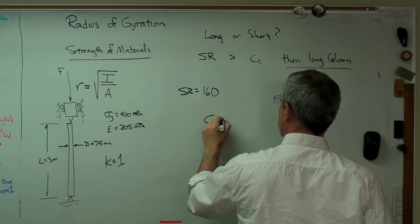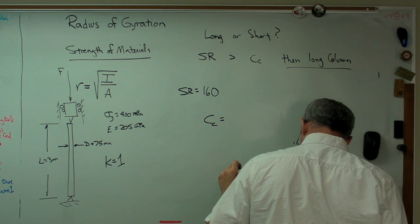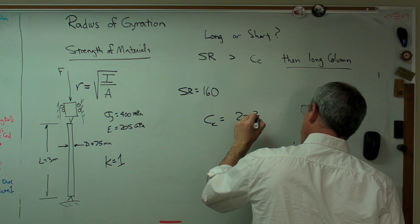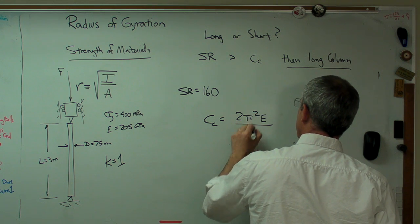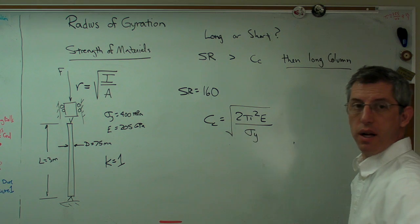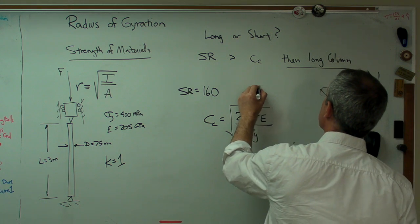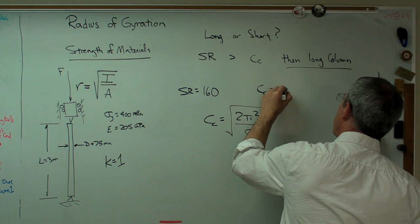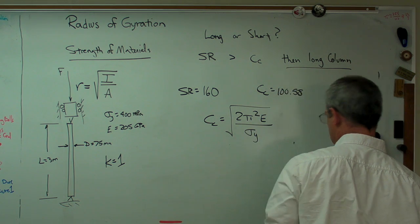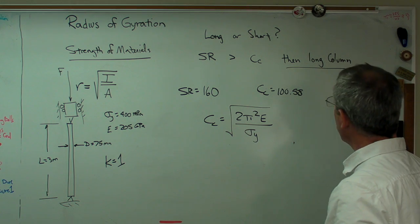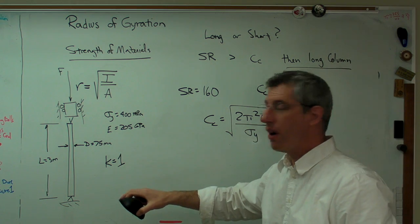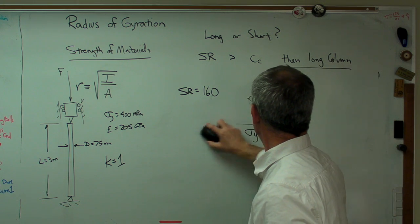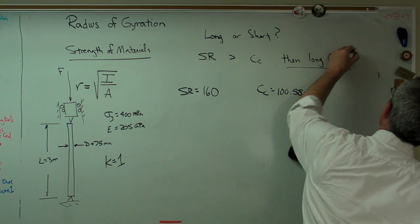So we've got slenderness ratio is 160. Column constant is, let's see, 2 pi squared E over S_Y squared root. That's the column constant. Column constant is also unitless. And here it turns out to be 100.58. All right. So because of that, we know that this is a long, slender column. We suspected that anyway. But we've now shown mathematically that it's true. So we've proven that.